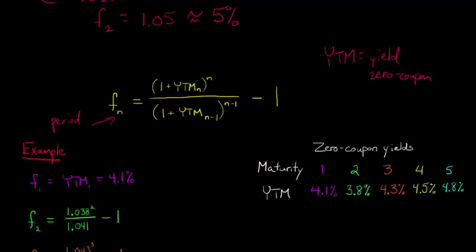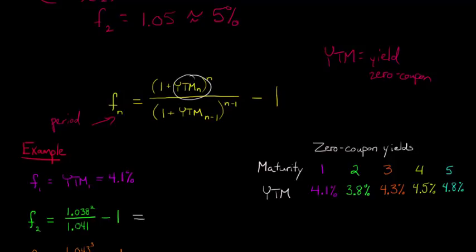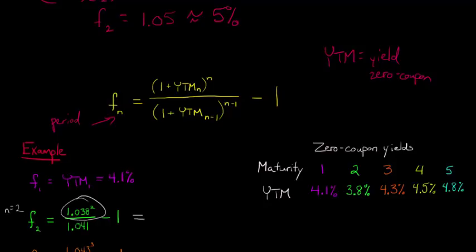Now what about the forward rate for year two? We use the formula: one plus the yield for period N, raised to the Nth power, divided by one plus the yield for period N minus one, raised to the N minus one power, then subtract one. N is two here, so we take 1.038 — that's one plus the two-year yield of 3.8% — and square it. In the denominator, we use the yield from the previous year: N minus one equals one, so we use 4.1%, giving 1.041 raised to the first power.